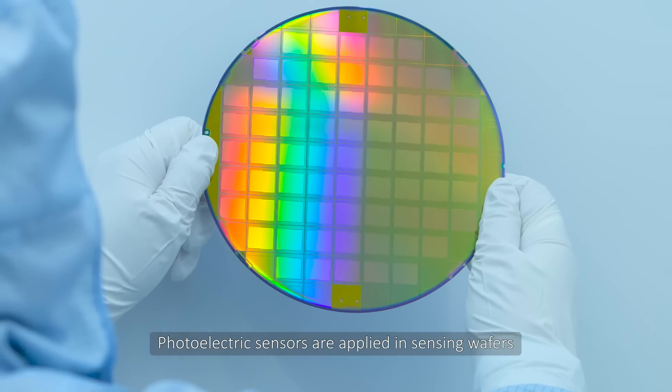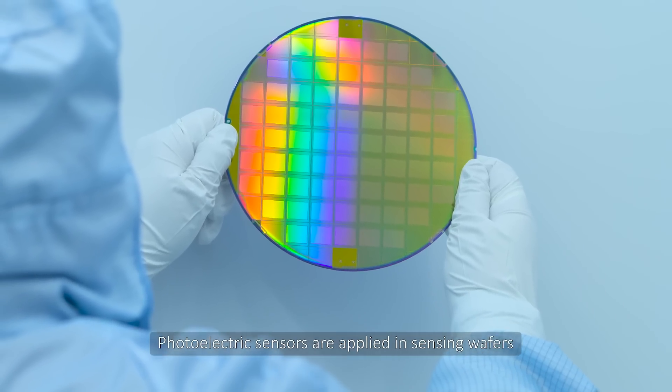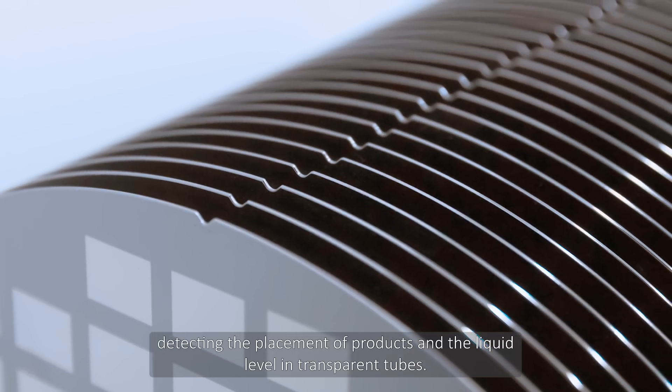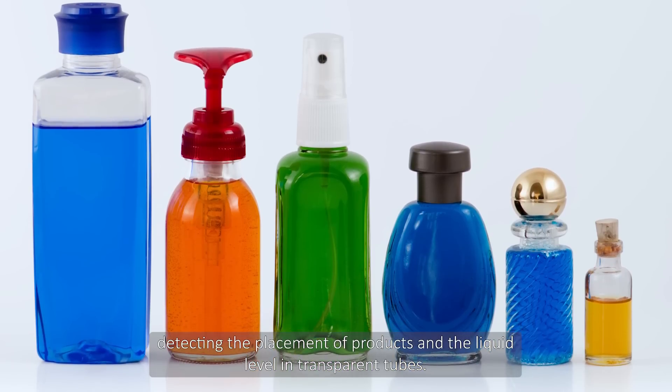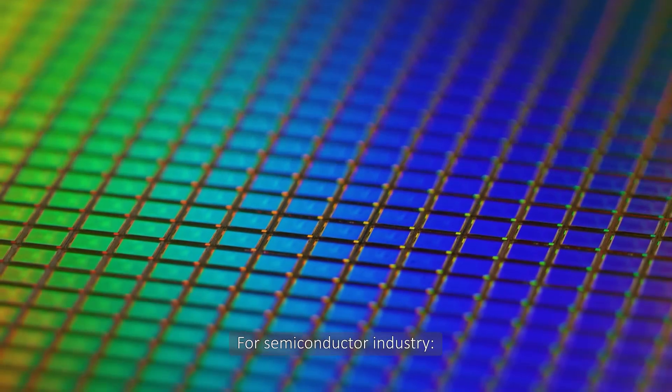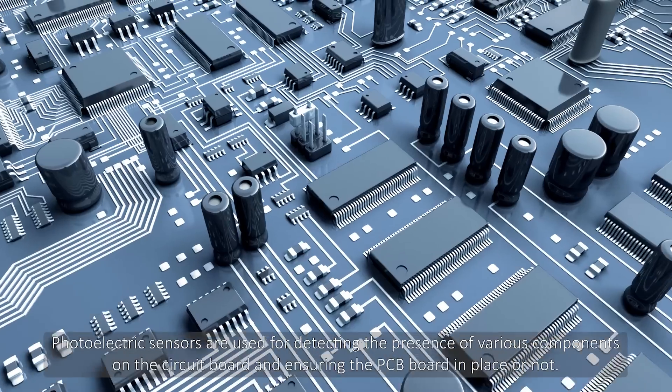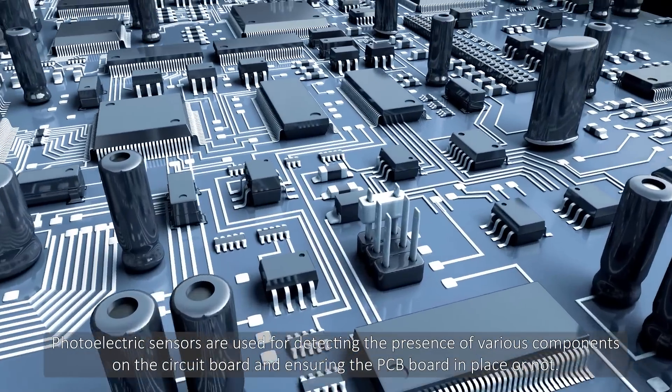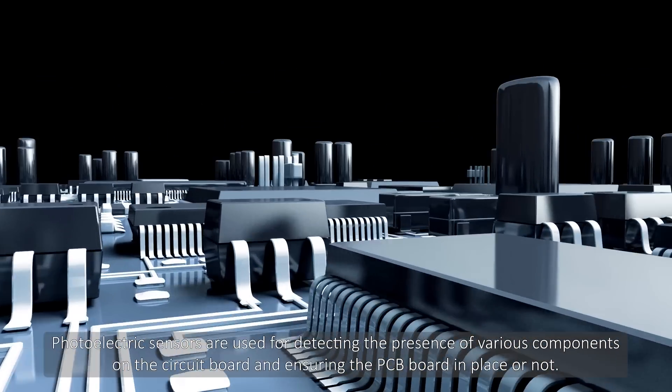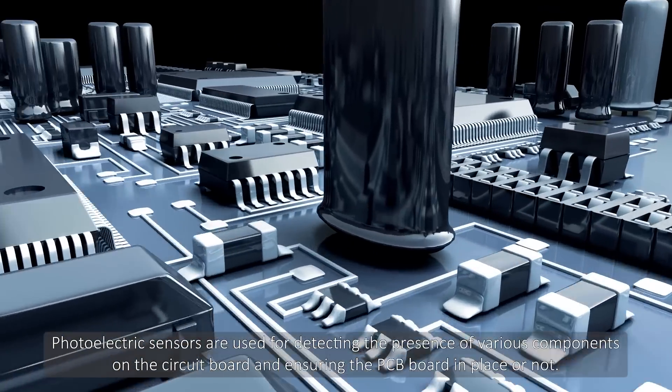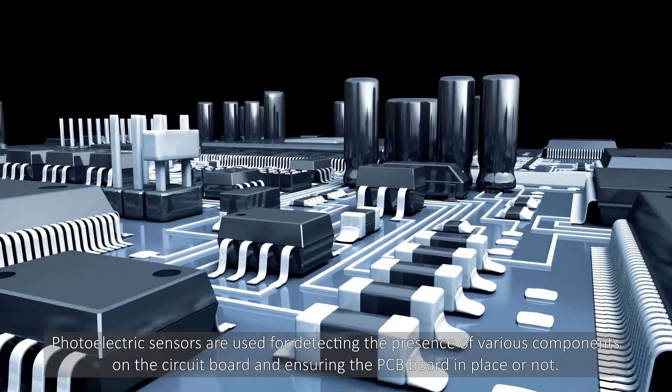For FPD and photovoltaic industries, photoelectric sensors are applied in sensing wafers, detecting the placement of products, and liquid leveling in transparent tanks. For semiconductor industry, photoelectric sensors are used for detecting the presence of various components on the circuit board and ensuring PCB board in place or not.